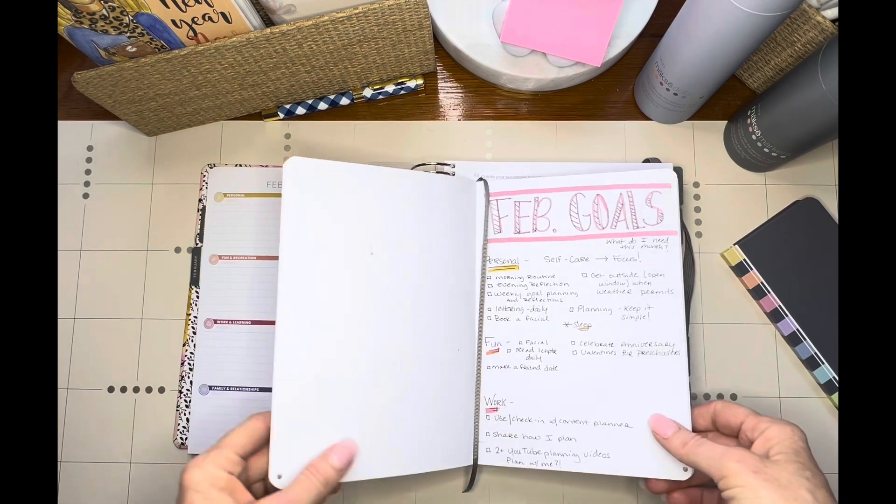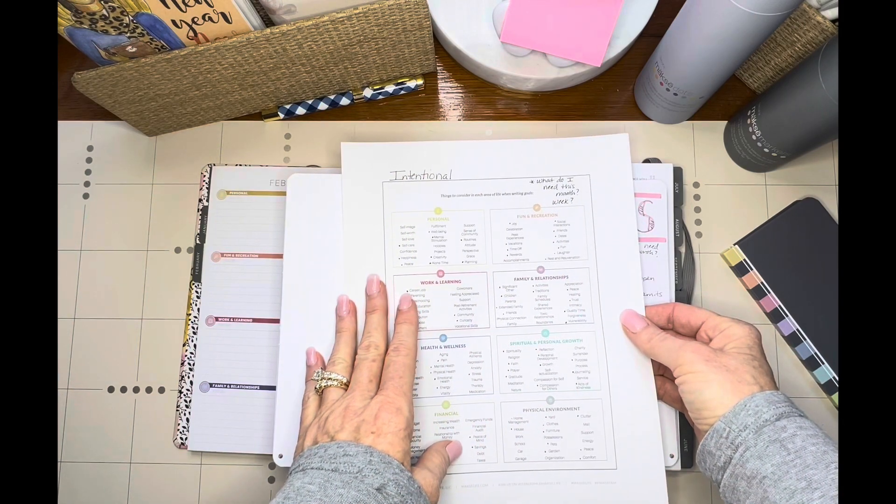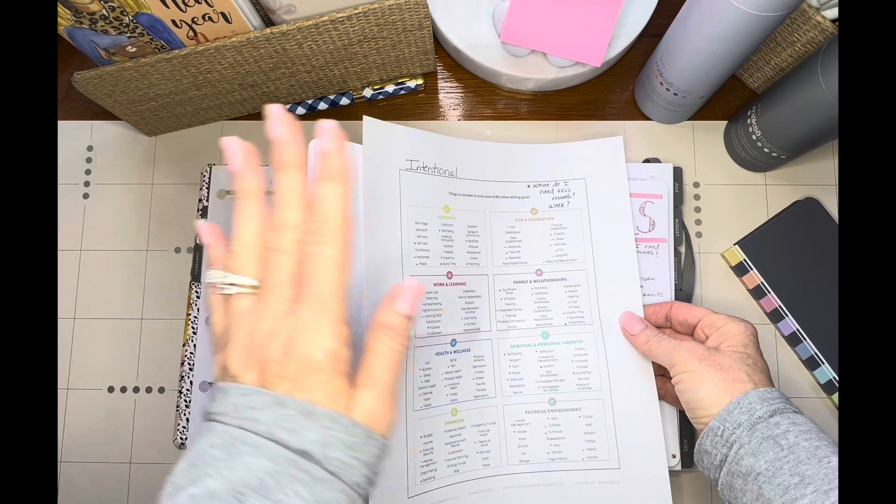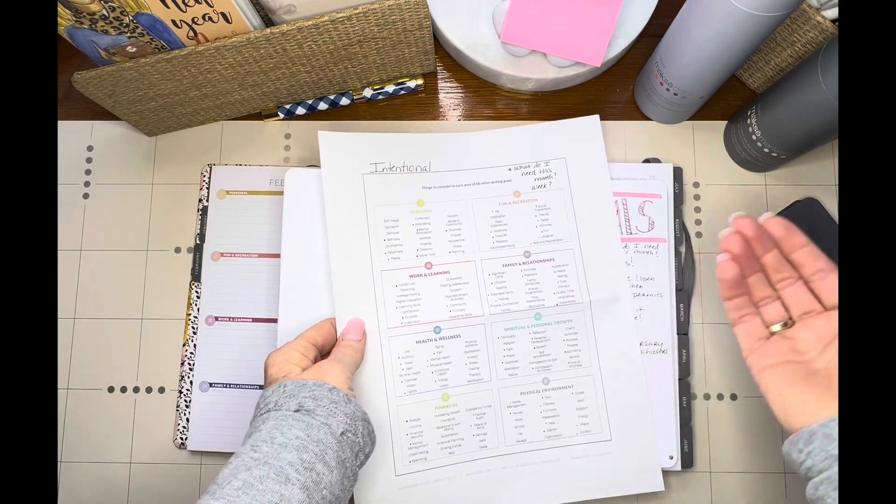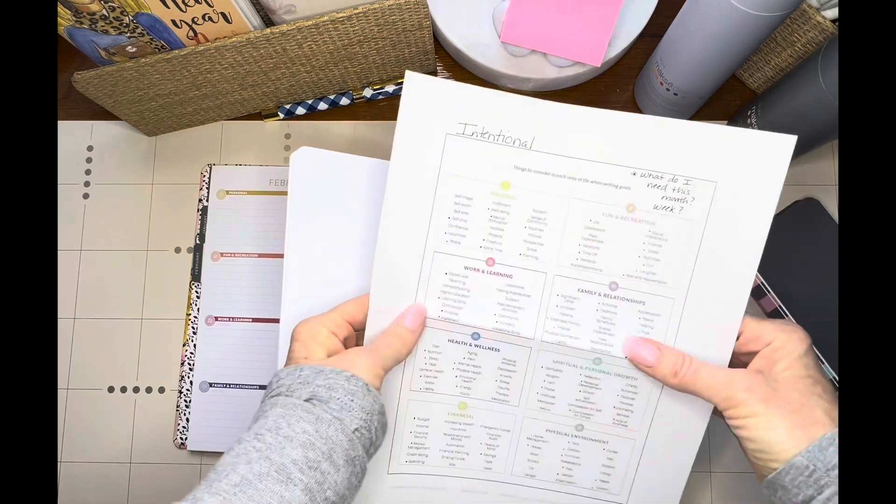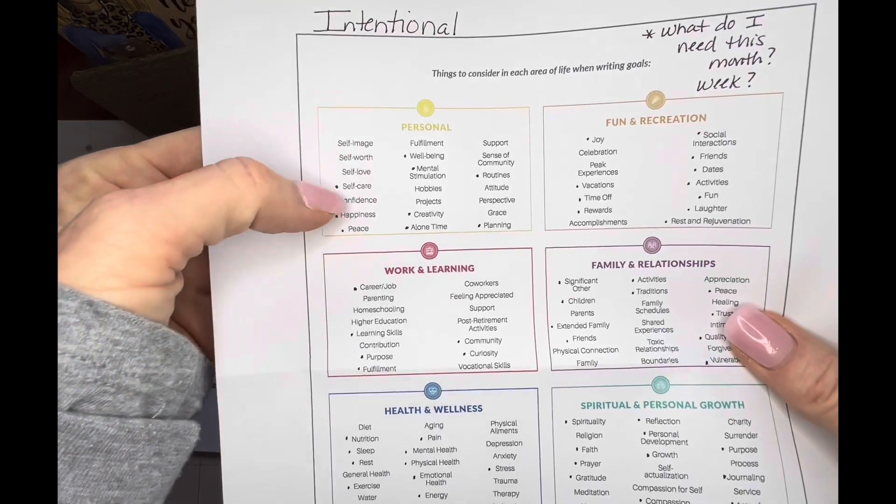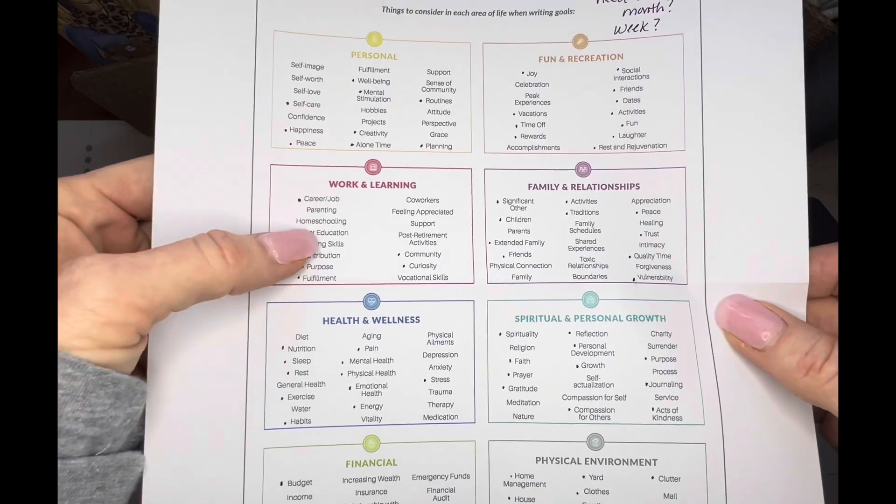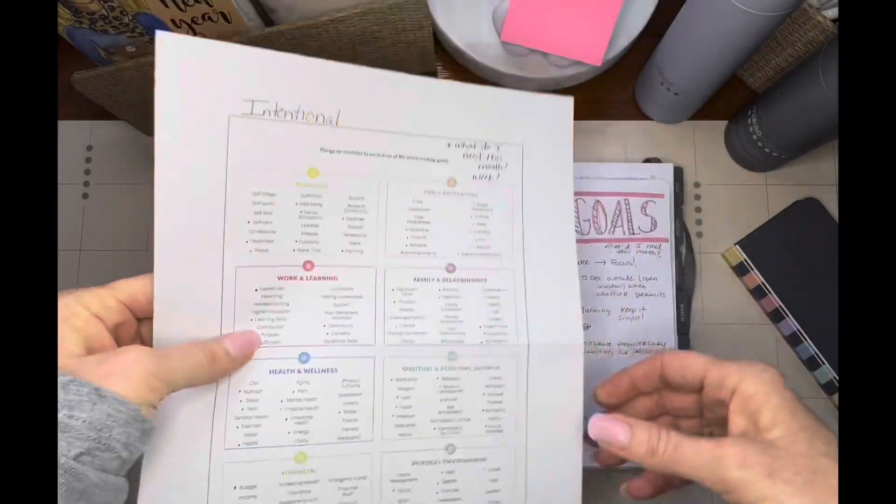I went through each category trying to think of things. They have free printables on the Moxie Life website and this is a page that is in the planner already and I'm always flipping to it. But I thought it might be easier to just have it printed out and then just keep pulling it every time I want to look at it or reference it. I have even gone in and made some little notes, little checks by some of the things that resonate the most with me on each of these areas of life.